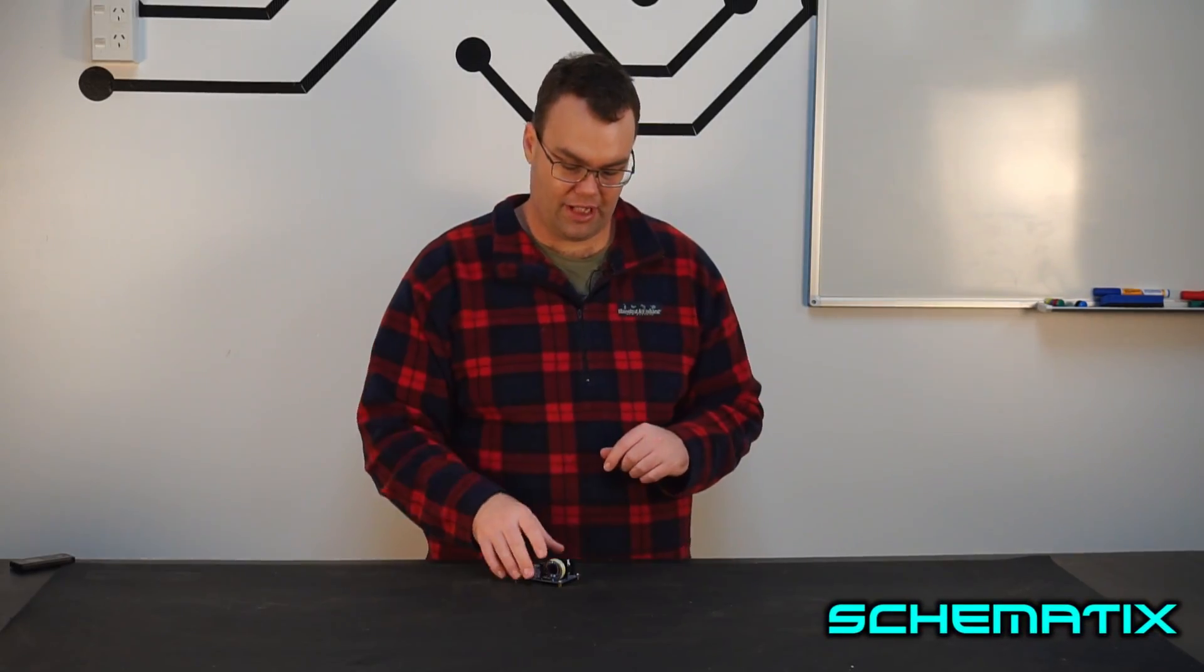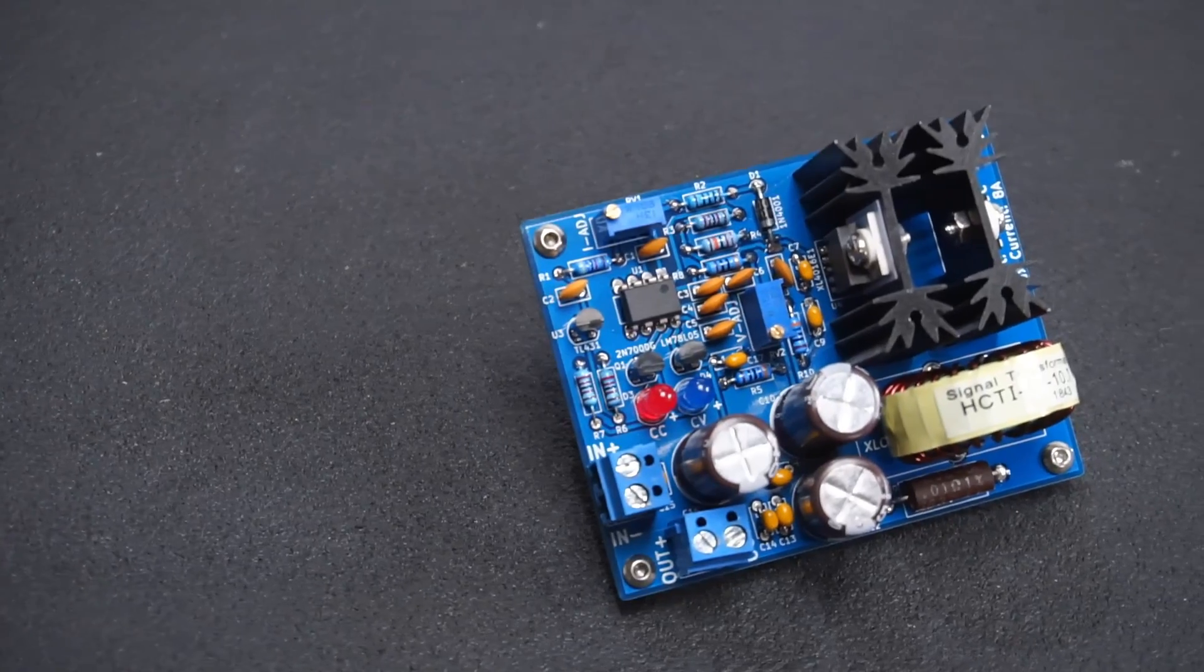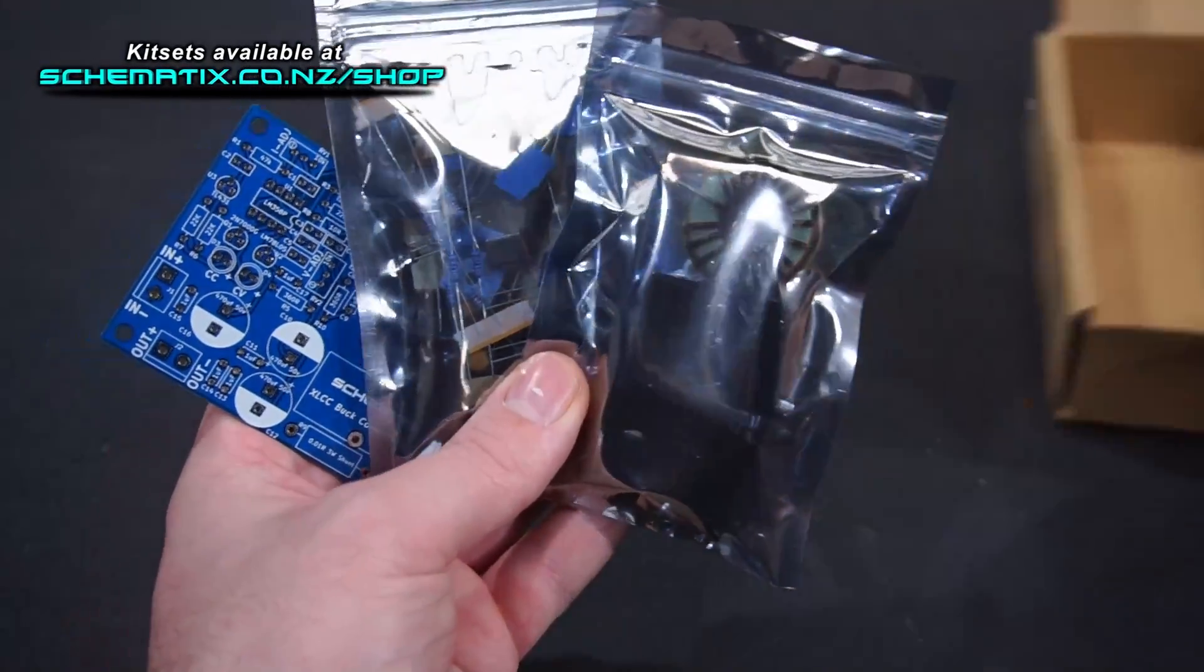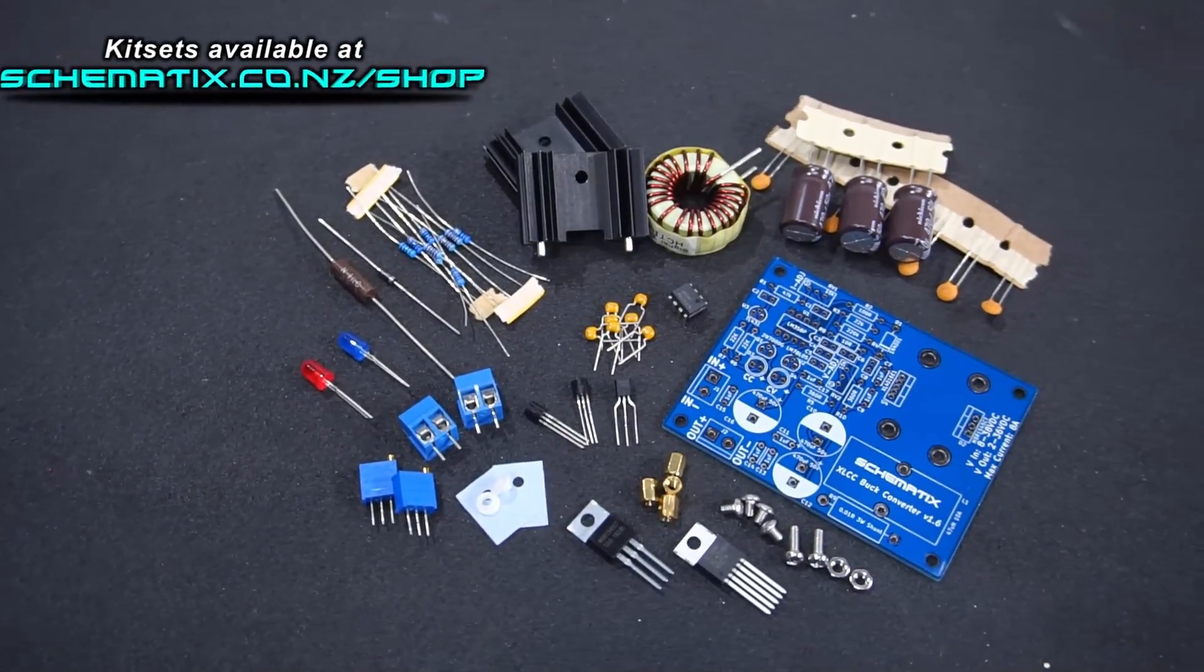In this video I'm going to show you how you can assemble my buck converter kit set, demonstrate some of its features and put it through its paces to see how good it is. In the box you'll receive a printed circuit board and anti-static bags filled to the brim with electronic goodies.